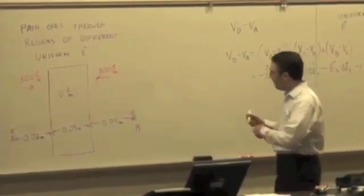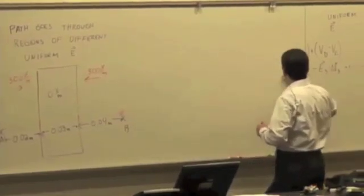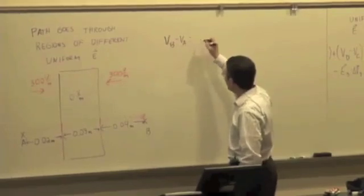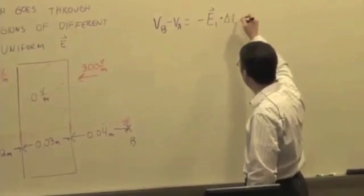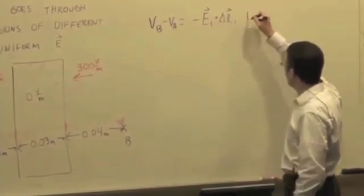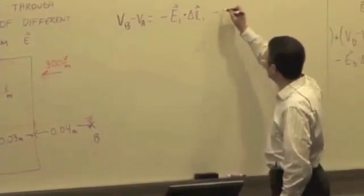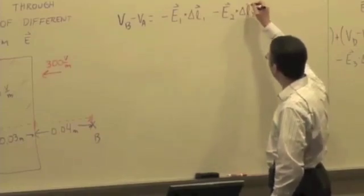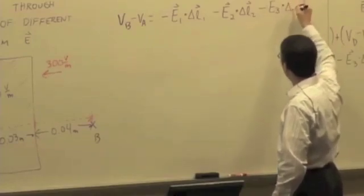So let's break it up into three sections. We have VB minus VA is going to be negative E1 dot delta L1 plus or minus, we're adding a negative here, minus E2 dot delta L2 minus E3 dot delta L3.